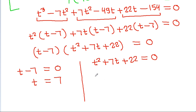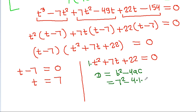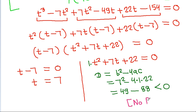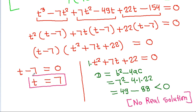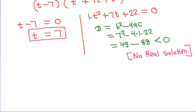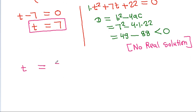Checking the discriminant of t squared plus 7t minus 22: b squared minus 4ac equals 7 squared minus 4 times 1 times 22, which is 49 minus 88, that is negative. That means there is no real solution from that factor. So t equals 7, meaning x square plus y square equals 7.